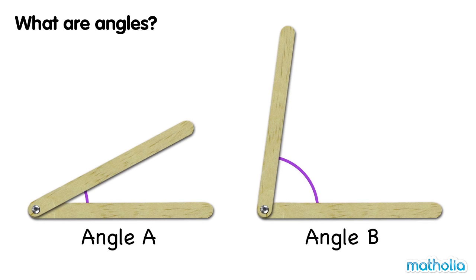Ice cream sticks have been used to form these two angles. The amount of turn between the sticks in angle A is smaller than the turn between the sticks in angle B. Angle A is smaller than angle B.